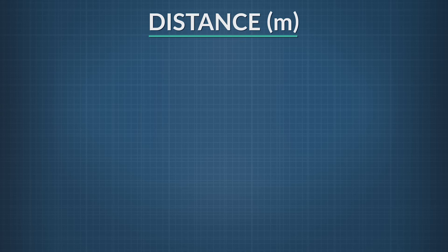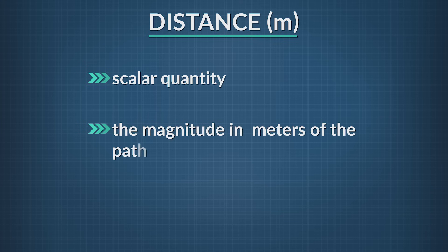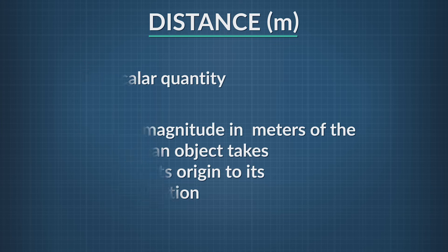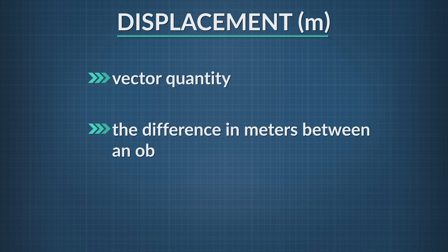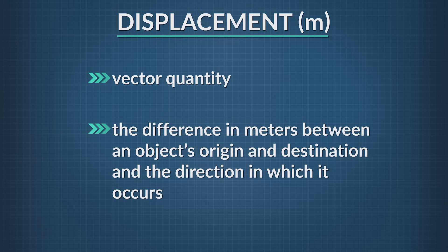To summarize, distance is a scalar quantity. It's the magnitude in meters of the path an object takes from its origin to its destination. Displacement is a vector quantity. It's the difference in meters between an object's origin and destination and the direction it occurred in. These differences will start becoming very important when we start to calculate motions of objects in later sections. That's it for this segment of Physics in Motion, and we'll see you guys next time.